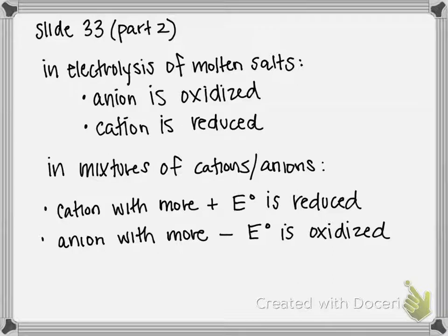The first part looks at molten salts. Whenever a molten salt is undergoing electrolysis, the anion is always oxidized and the cation is always reduced. If we have a mixture of cations and anions, the cation with the more positive standard electrode potential is reduced, and the anion with the more negative electrode potential is oxidized. Keep that in mind as we work through these two examples.